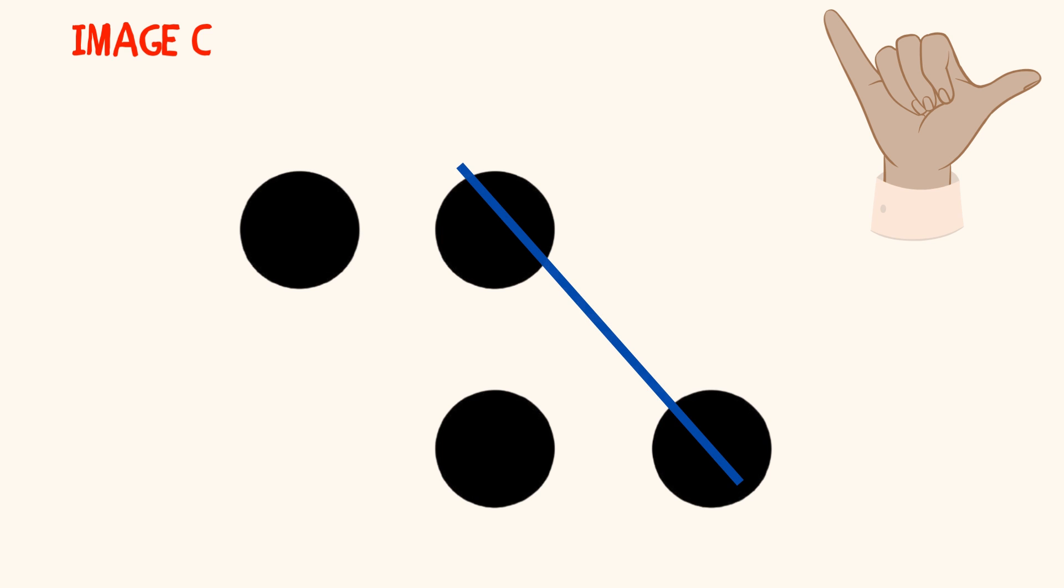Another student might say, I saw two dots in a diagonal line on the right and another two in a diagonal line on the left. Again, two plus two equals four. Don't forget to prompt about the agree signal.